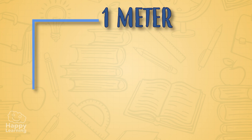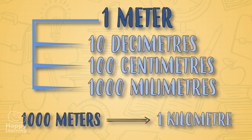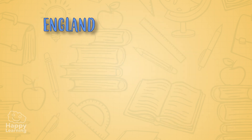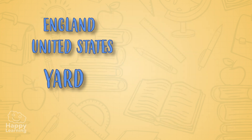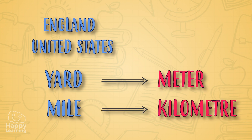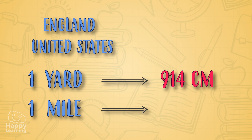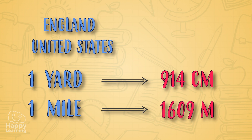Now that we've learnt the units to measure longitude, there's something you need to bear in mind. Not all countries use the metre as a means of measuring longitude. In England and the United States, they use yards and miles instead of metres and kilometres. A yard is equal to 914 centimetres and a mile is 1,609 metres. It's a bit strange that we don't all measure in the same units, but that's what the world's like.